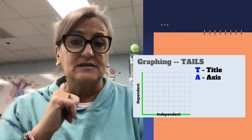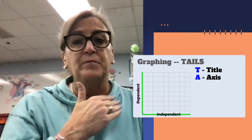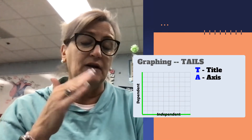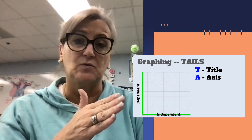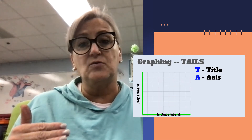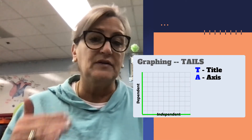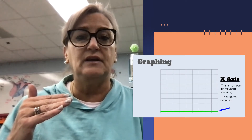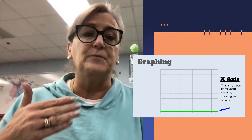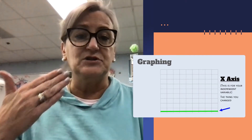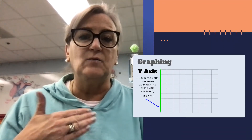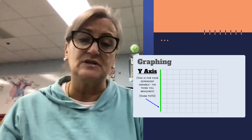Next, label the axes and put the data on the correct axis. Another mnemonic we use is DRY MIX: D-R-Y means the dependent or responding variable goes on the Y axis, and M-I-X means the manipulated or independent variable goes on the X axis. The independent variable is what you change — it is independent of anything else, and as the scientist, it's what you controlled. The dependent variable is what changes as a result of the independent variable, and that goes on the Y axis.